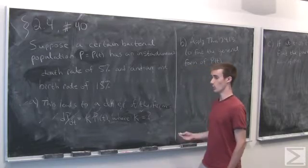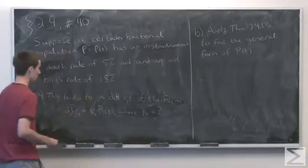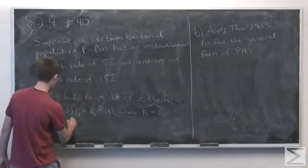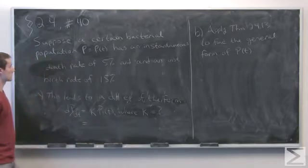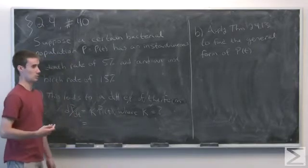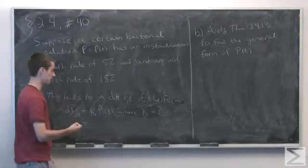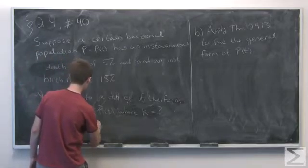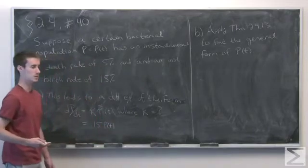Part A asks us to find what k equals. We know that the rate of change of the population at time t is going to be growing at the rate of 15%, so 0.15 times the population at time t.